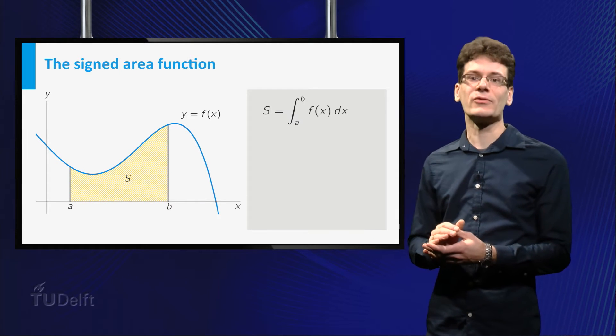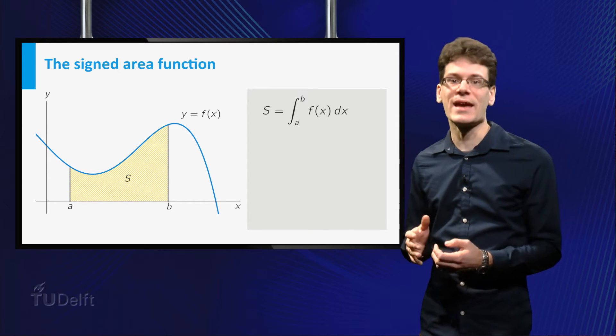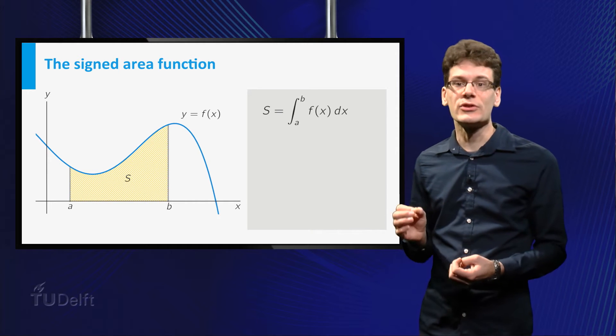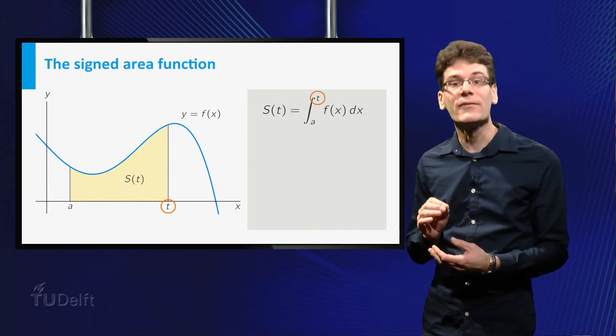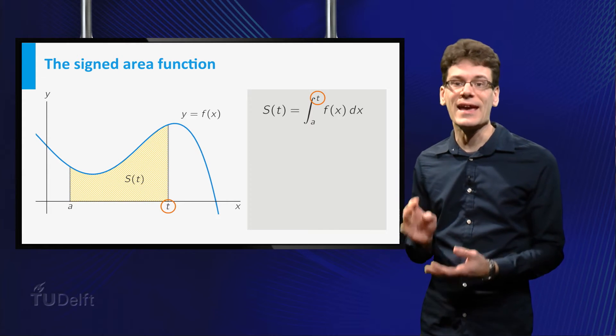Now let us make the upper boundary variable. To stress this, let's replace b by a more standard variable name. We cannot use x, since it is already used in the integral, so let's use t instead. If t varies, so does the signed area, which we stress by writing s of t.